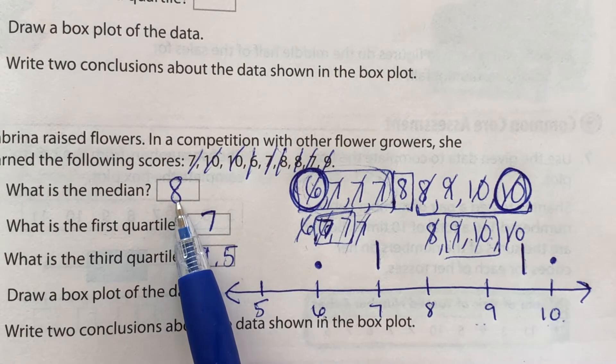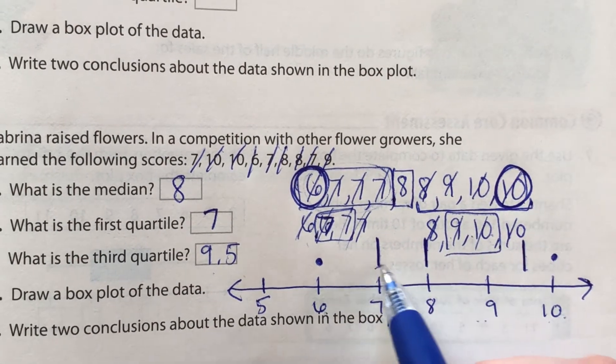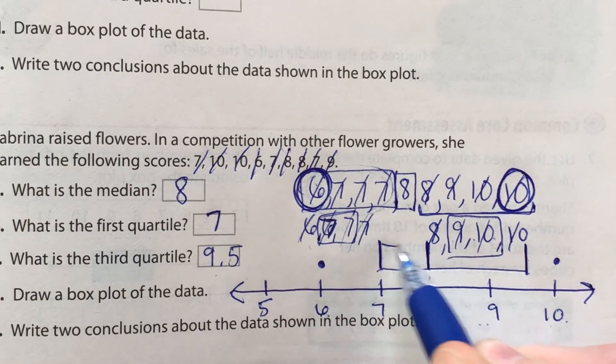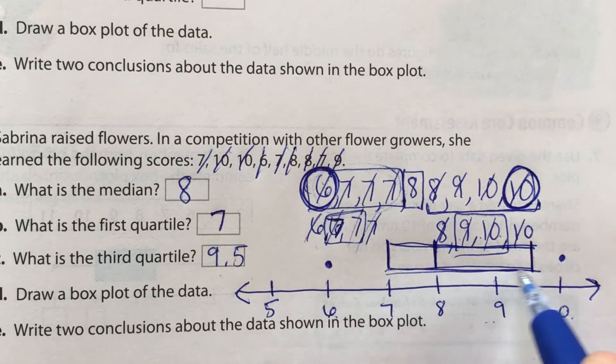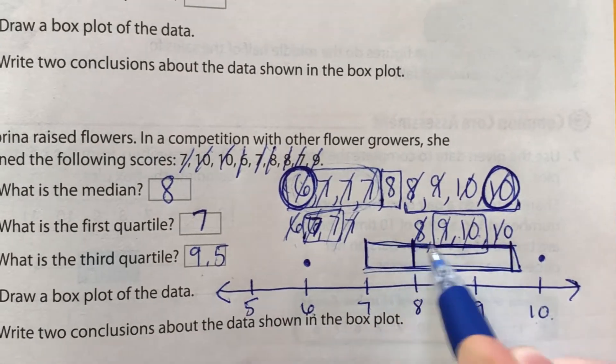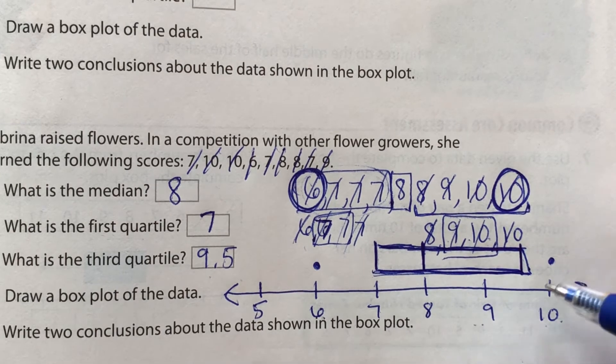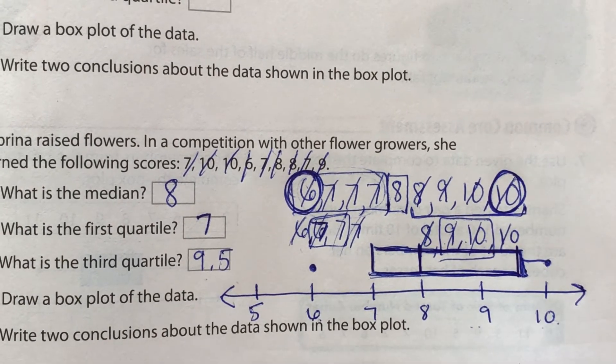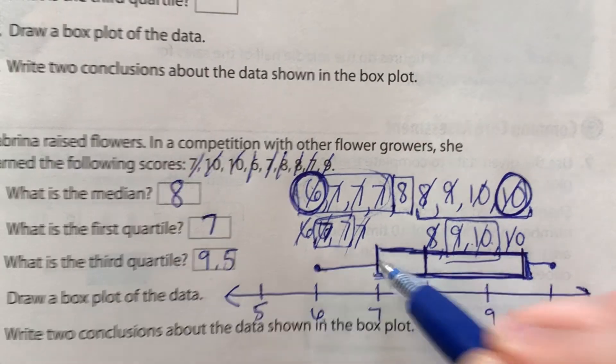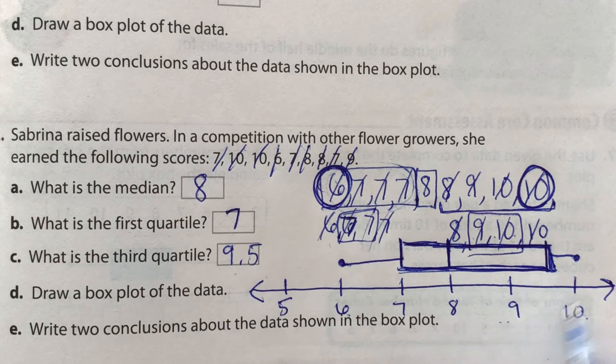That's where our box ends. And our median, which is in the middle of our box, is right here at eight. So we connect all three of those lines. So this is what our final box looks like. I'll outline it a little darker so you can see. That's our box. And then what we do, draw a line from the maximum to the box and the minimum to the box. So now this is our box plot.